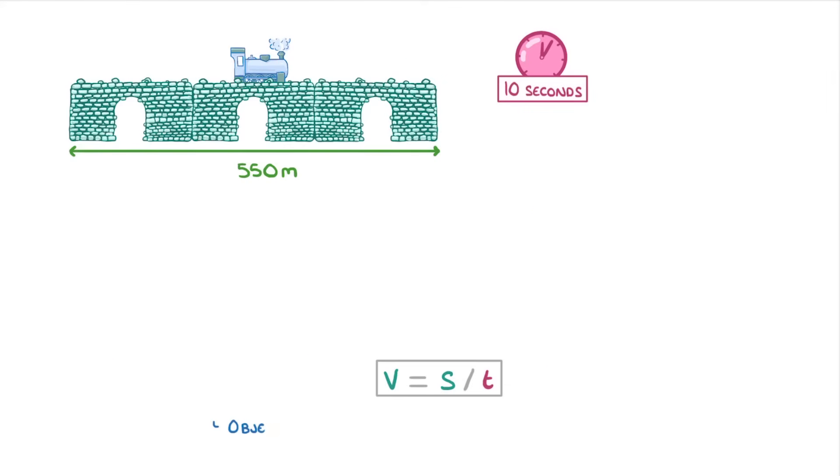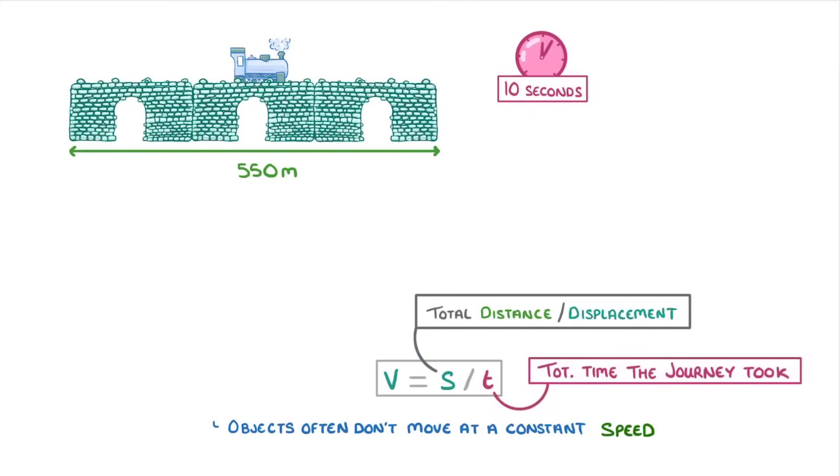Now often, objects don't actually move at a constant speed but instead vary along their journey. We can still use this equation, but we need to divide the total distance, or displacement, by the total time that the journey took. And the value that we calculate will then be the average speed or average velocity.